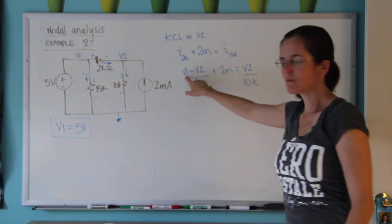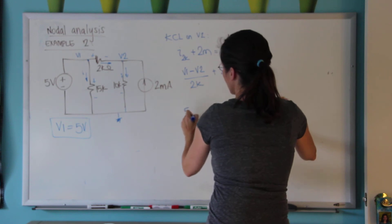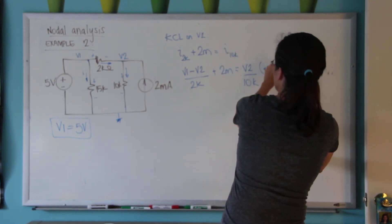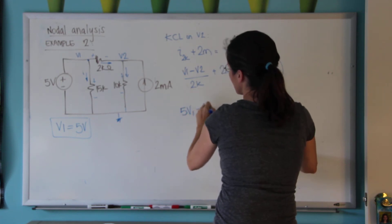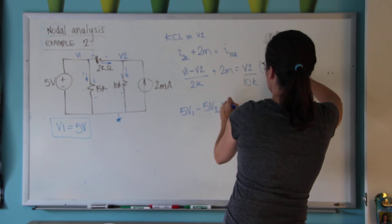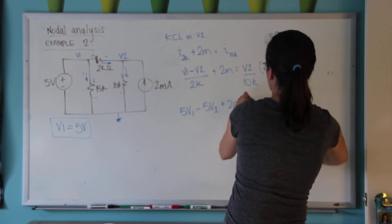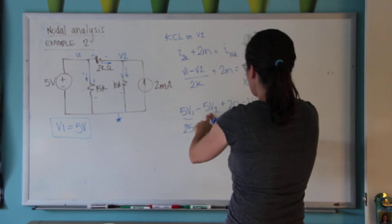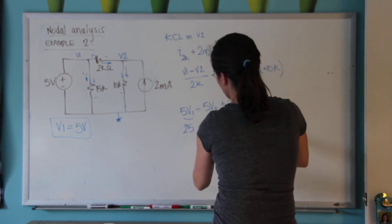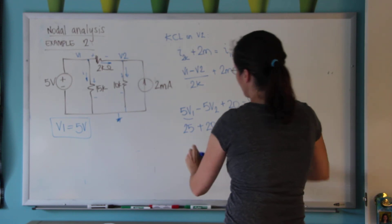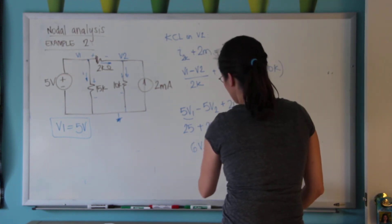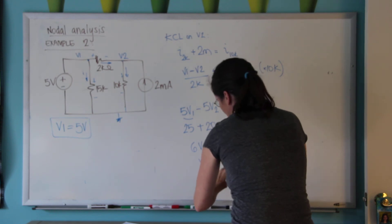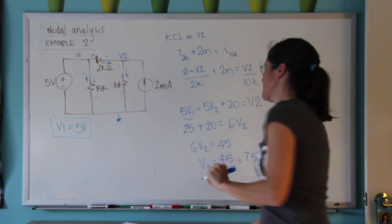Now I know V1 is 5 volts. I'm going to multiply the whole equation by 10k to make it easier. So this gives 5V1 minus 5V2 plus 20 equals V2. Since 5V1 equals 25, moving terms: 25 minus 5V2 plus 20 equals V2, which gives 6V2 equals 45, so V2 equals 45 divided by 6, which is 7.5 volts.